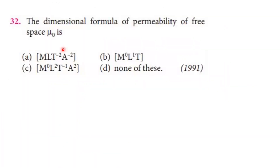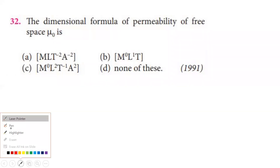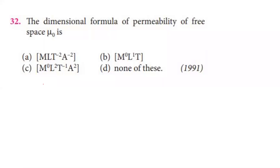Permeability of free space μ₀. The force between two magnetic poles: F equals μ₀ divided by 4π, times M1 times M2 divided by R squared, where M1 and M2 are pole strengths.